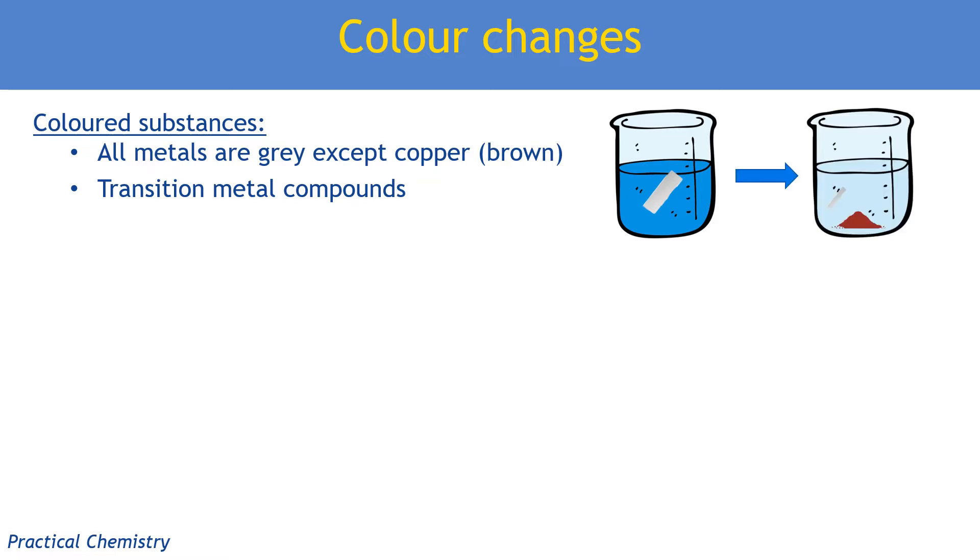I can talk about the magnesium getting smaller, I could talk about the grey solid, which is magnesium, disappearing. I could talk about a brown solid, which is my copper, appearing. But I could also talk about the blue colour of the copper sulphate getting lighter and then becoming a colourless solution. And that's because magnesium is not a transition metal, so its solutions will be colourless when it replaces copper from a compound.